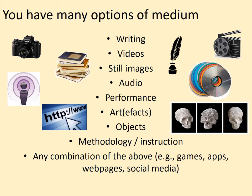You might also think about methodologies and instructions — how-to lists, bullet points of key things to consider, checklists — these are actually really useful, and depending on your context that might count as research communication. Of course, you can have things that arise from any combination of the above: games, apps, web pages, and social media often draw on multiple media and combine them so you have one product taking in lots of different formats. The point is there are lots of different choices, and if one thing isn't right for a particular audience or you're not good at it, you have lots of other options — but you really do have to think about which is most appropriate for a given project.